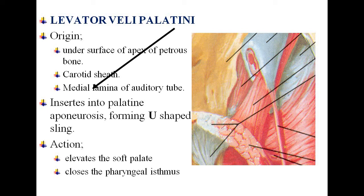For each muscle we study origin, insertion, nerve supply, and action. The nerve supply is common for all and will be discussed separately. Levator veli palatini: its action is to elevate the soft palate and close the pharyngeal isthmus. It arises from the undersurface of the apex of the petrous part of the temporal bone and the carotid sheath. It inserts into the palatine aponeurosis, forming a U-shaped sling.